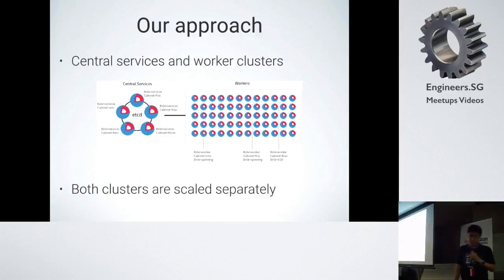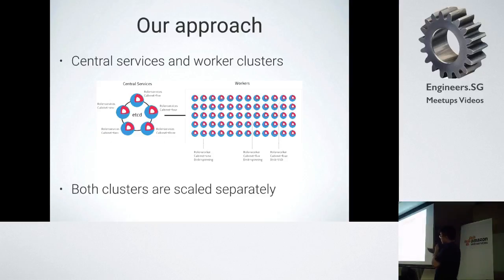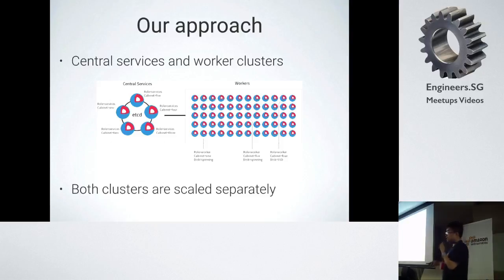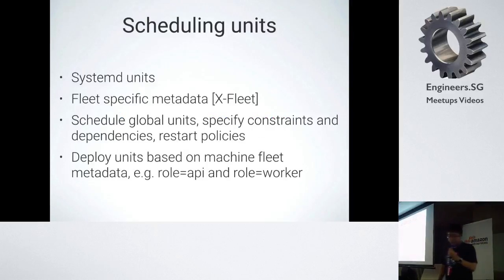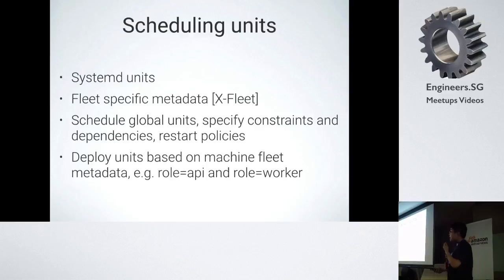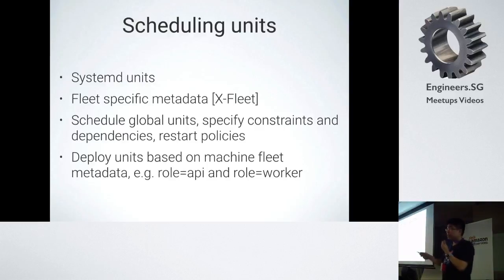Our approach is to have central services and worker clusters. We have a central Fleet cluster, and based on that we have a series of workers which run the main workload. The Fleet cluster provides synchronization for central services such as our queue system. Both clusters can be scaled separately. Units are written as SystemD units with specific metadata, and this metadata can be used to designate certain hosts with different roles — for example, API hosts or service hosts — and they will run different kinds of service units.